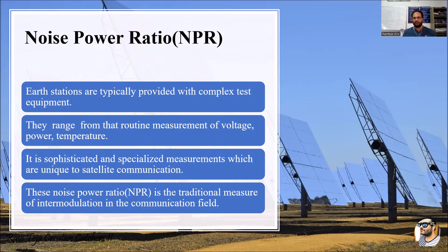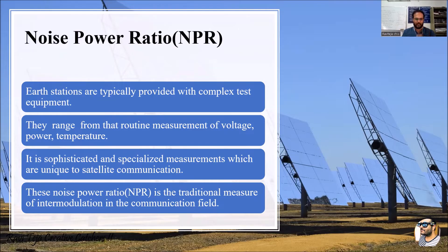We need special equipment for the earth station to measure the noise power ratio (NPR) by routinely measuring parameters like voltage, power, and temperature involved in the earth station supply. These are sophisticated and specialized measurements unique to satellite communication — much more complex and very important.